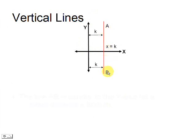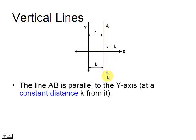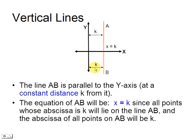A line AB is parallel to the y-axis when all of its points are at a constant distance from it. That equation would be x equals k.